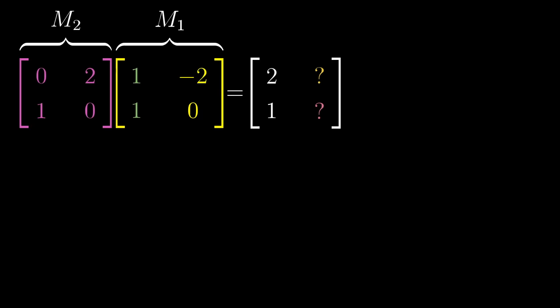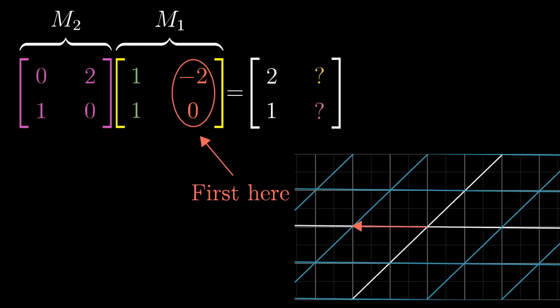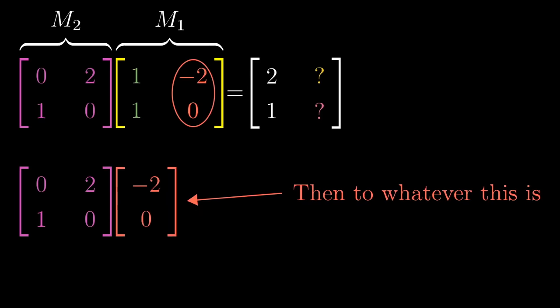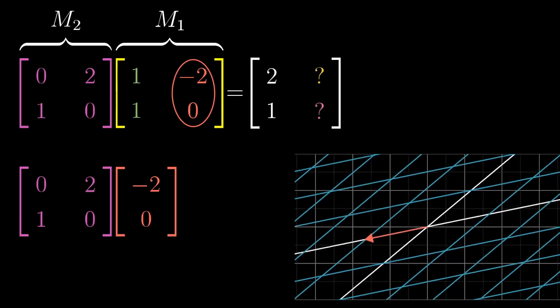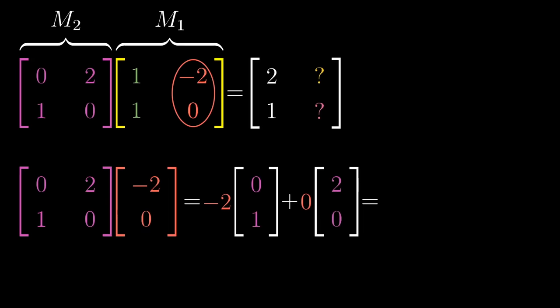Likewise, to follow j hat, the second column of M1 tells us that it first lands on negative 2,0. Then, when we apply M2 to that vector, you can work out the matrix vector product to get negative 2,7, which becomes the second column of our composition matrix.